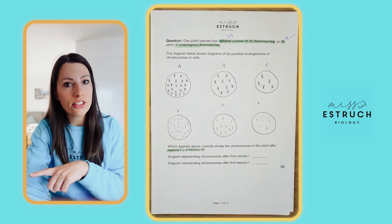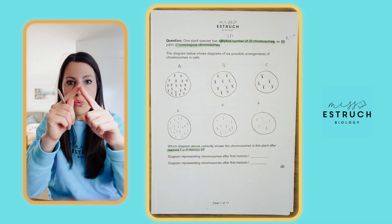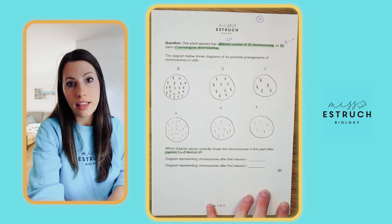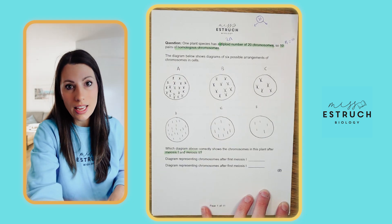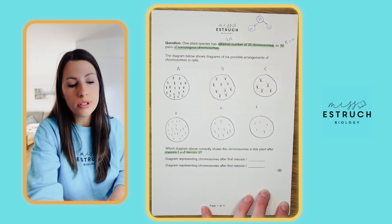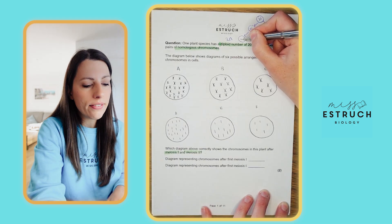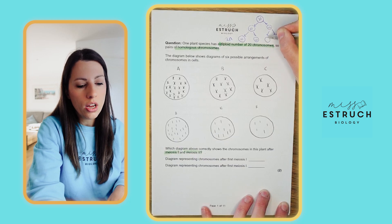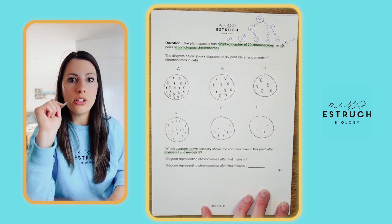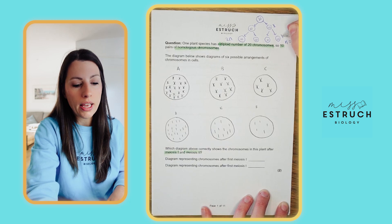After meiosis 1 you have already had one round of division. Starting with 20 chromosomes, the homologous chromosomes separate in meiosis 1, so you now have 10 chromosomes. In the second round of division it's the chromatids that separate, so you still have 10 chromosomes in all four daughter cells. At the end of meiosis 1 chromosomes are still made up of two chromatids joined at the centromere.